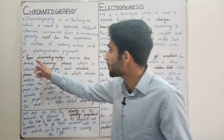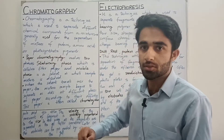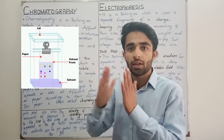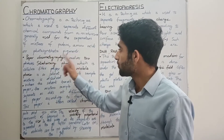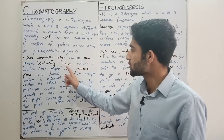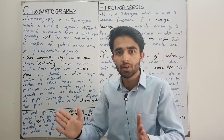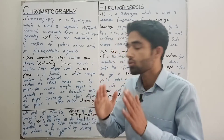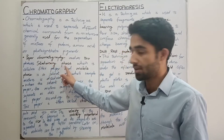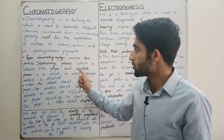Paper chromatography mein basically hum do phases use karte hain, jo ke aap ko diagram mein nazar a rahe honge. Pehla jo phase hai isme hai stationary phase, which is cellulose filter paper. Jo filter paper hai jo cellulose ka bana hota hai, woh jo cellulose filter paper hai woh basically stationary phase hai, yani ki usme movement nahi hogi.